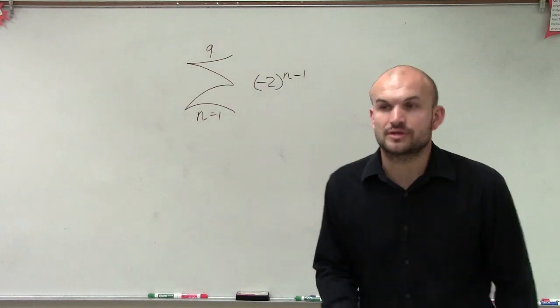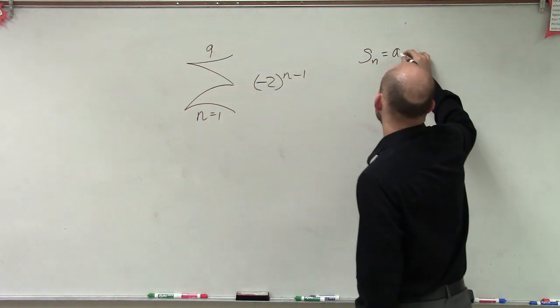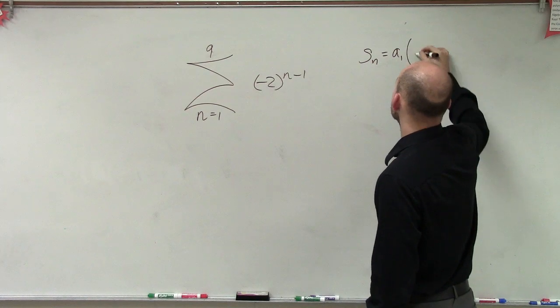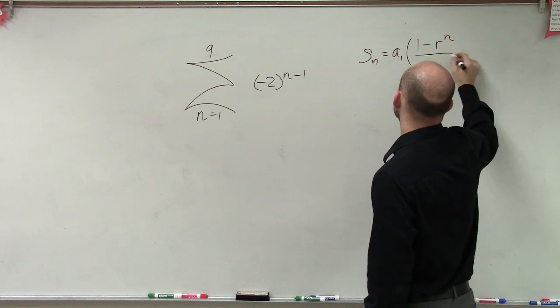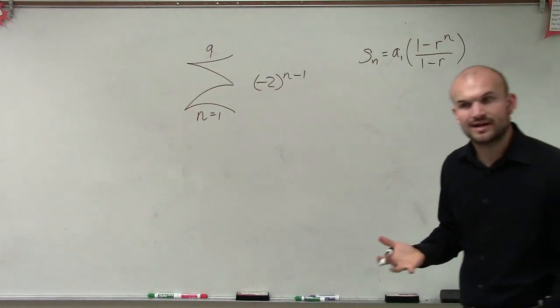One thing we want to make sure we understand is for using the partial sum, s of n, we know that we have to have a sub 1 times 1 minus r to the n divided by 1 minus r. We need to be able to figure out what r is, right? r is our ratio.